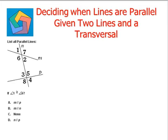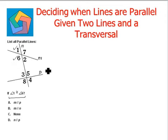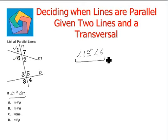Let's try the next question: list all parallel lines. We are given that angle 1 is congruent to angle 6. However, this does not satisfy any of the conditions for lines to be parallel when cut by a transversal. So we say none of the lines are parallel to each other — that is option C.